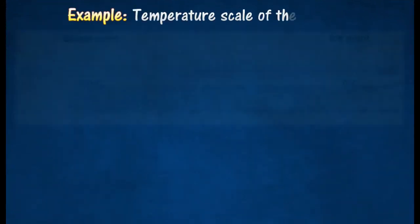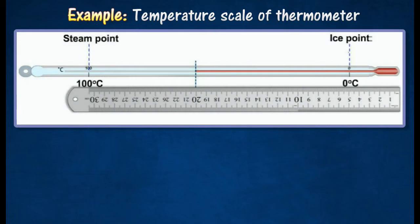The figure shows an uncalibrated thermometer. The lengths of the mercury column at the ice point and the steam point are 5 cm and 30 cm respectively. When the thermometer is placed in a liquid, the length of the mercury column is 20 cm.